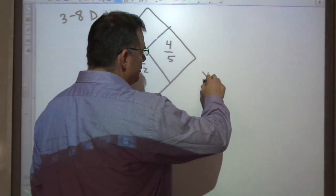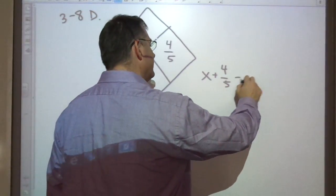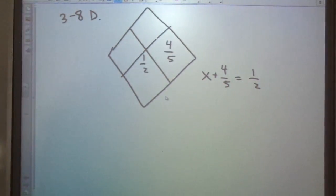So what would you need to add to 4/5ths to give you 1 half? This is really what we're trying to find.